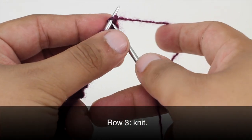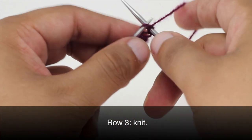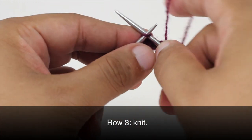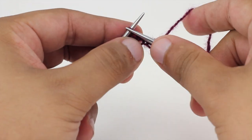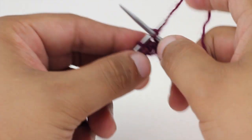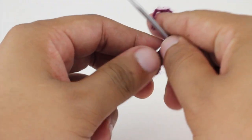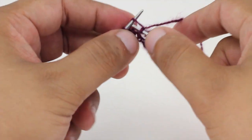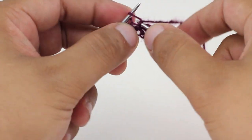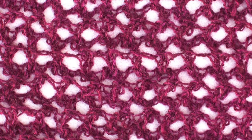Row 3. We are going to knit all stitches. So repeat rows 1 through 3 until you have reached your desired length. And that is how you knit the cane stitch. After a few repeats your pattern should look like this.